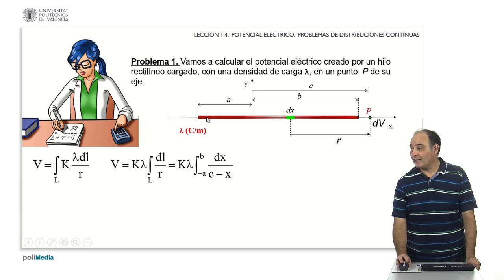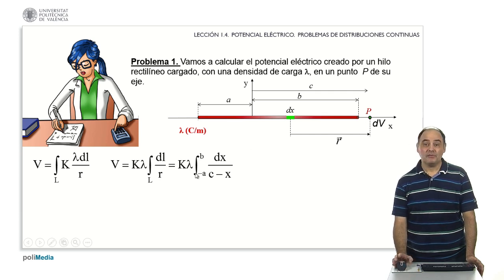I have to consider all the green segments whose x coordinate is from this one here, minus a, to this one here, b. So I have already defined the problem in mathematical form.